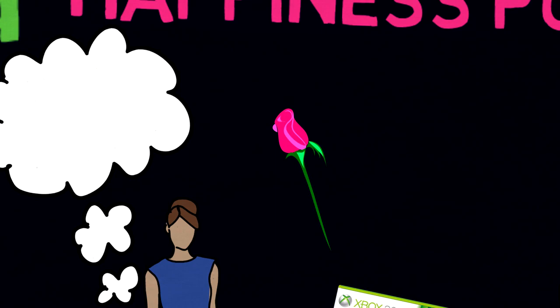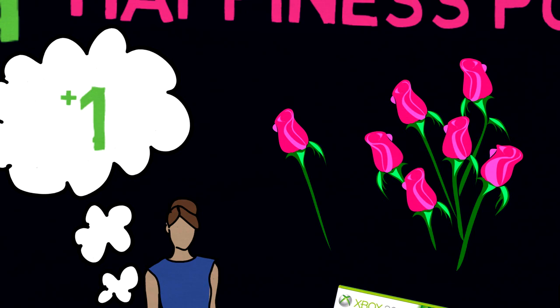If Bill gets Britney one rose on his way home, that will be one point for her. If Bill got 10 roses for Britney, it would still be just one point.